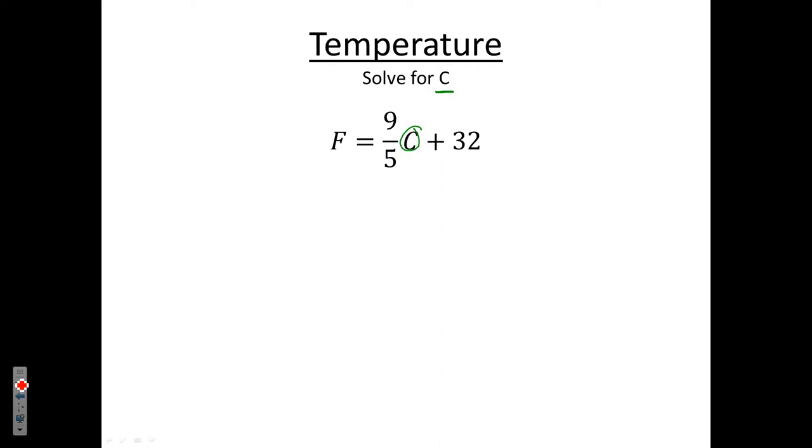Notice that the letter we're trying to solve for, which is C, is on the right-hand side. There are two things in the way of us having C completely by itself: we have 9/5 and we have plus 32. You will always get rid of the addition or subtraction piece before you ever touch anything that's being multiplied or divided. So I'm not going to touch the 9/5 right now. I'm going to focus on the addition or subtraction piece, which is the plus 32.